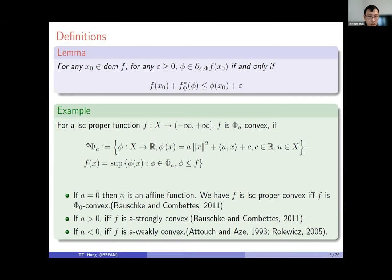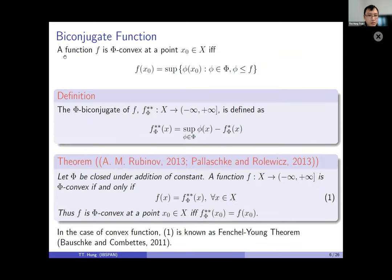If a equals zero, the class of phi gives the standard convex functions. If a is greater than zero, this corresponds to strongly convex functions. If a is less than zero, these are called weakly convex functions. We also introduce the phi-conjugate function, taken as a supremum over phi, and a representation theorem: if f equals its phi-biconjugate then f is phi-convex, and we define phi-convexity at a single point.